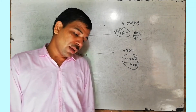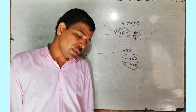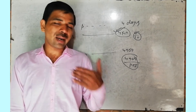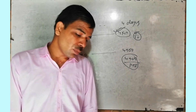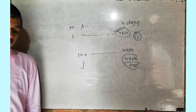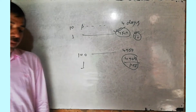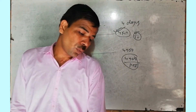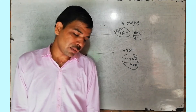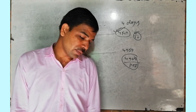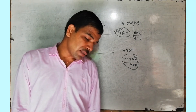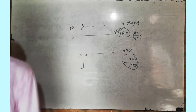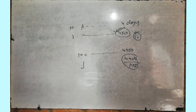Question number 6: A garrison has provisions for 200 people for 45 days. After 15 days, 40 more men join the garrison. Find the number of days for which the remaining food will last.